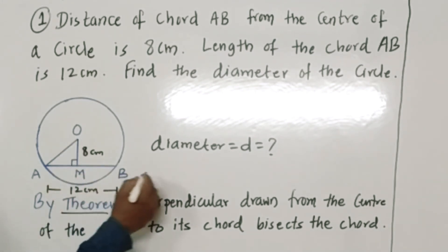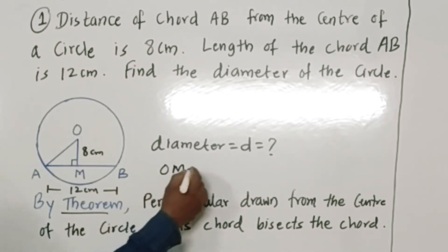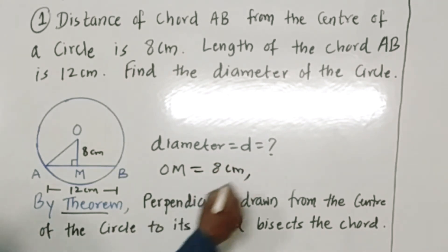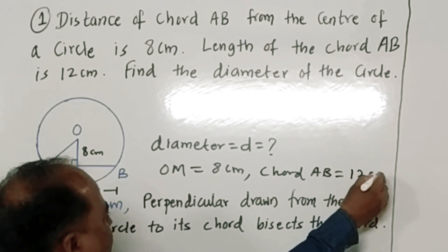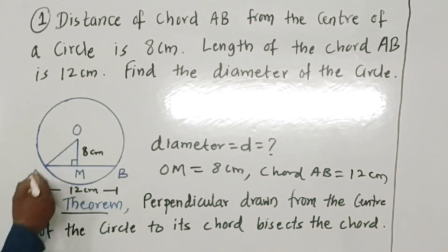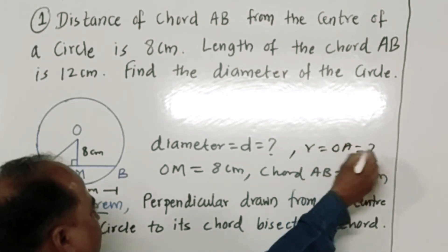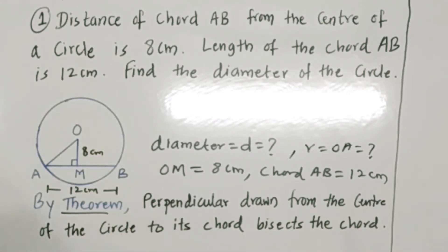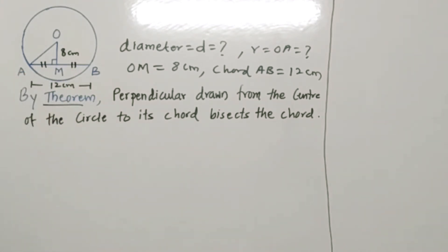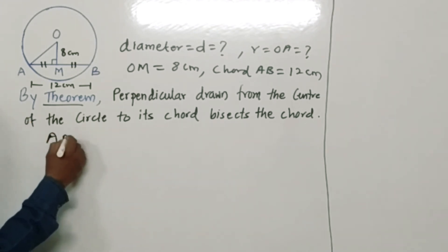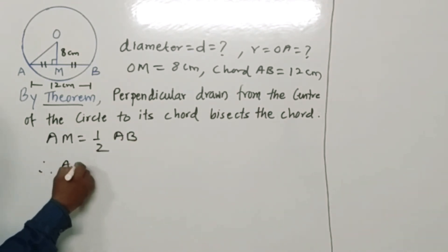O is the center, and OM is the distance of the chord from the center, so OM = 8 cm. The length of chord AB = 12 cm. We will first find the radius OA. By the theorem, the perpendicular drawn from the center bisects the chord into two equal parts, so AM = MB. Therefore AM = (1/2) × 12 = 6 cm.